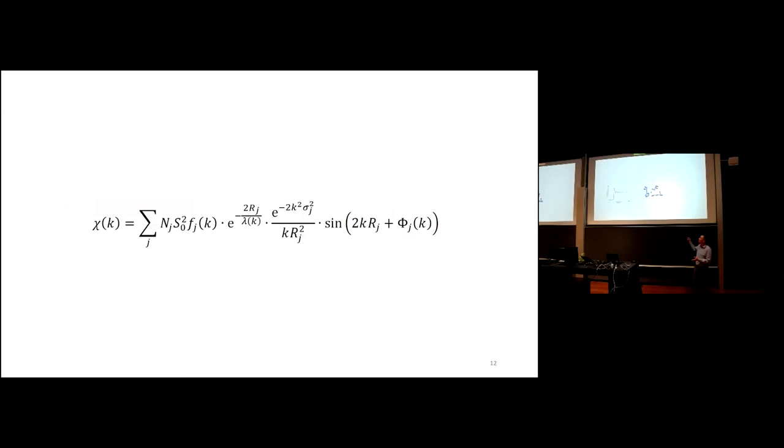Now we understand the phenomenon and want to do some analysis on these experimental curves. It was figured out that this chi signal — the wave curve — is actually a sum of sine functions, one sine function for each of the paths the photoelectron can take: going to a neighboring atom and going back, or going to another neighboring atom and going back. Clever people in about the 1970s formulated a mathematical expression that actually calculates this chi signal. As you see, there is a sum over j number of different paths, and all the way on the right there is a sine function — so this is a sum of sine functions.